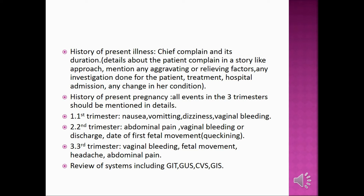First trimester: nausea, vomiting, dizziness, vaginal bleeding. Second trimester: abdominal pain, vaginal bleeding or discharge, date of first fetal movement or quickening. Third trimester: vaginal bleeding, fetal movement, headache, abdominal pain. Review of systems including GIT, general urinary system, CVS, and all gastrointestinal symptoms.